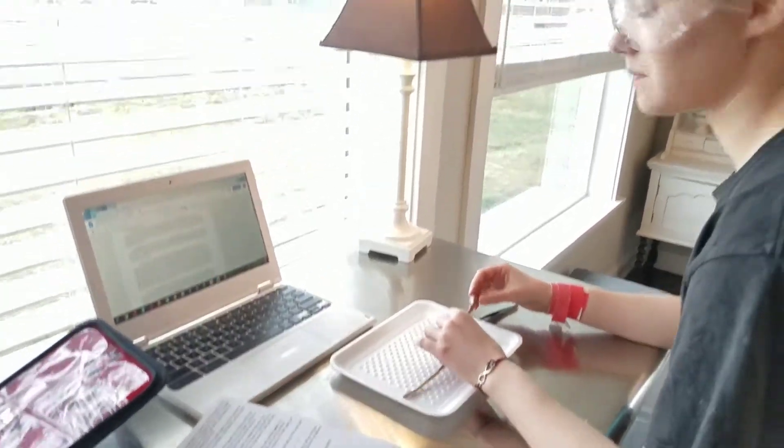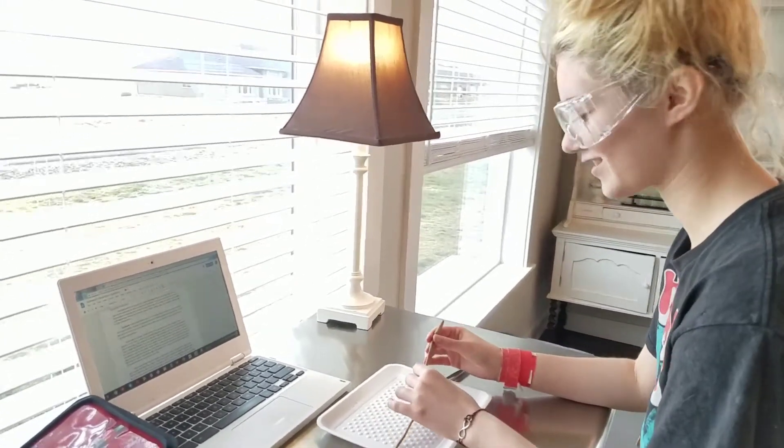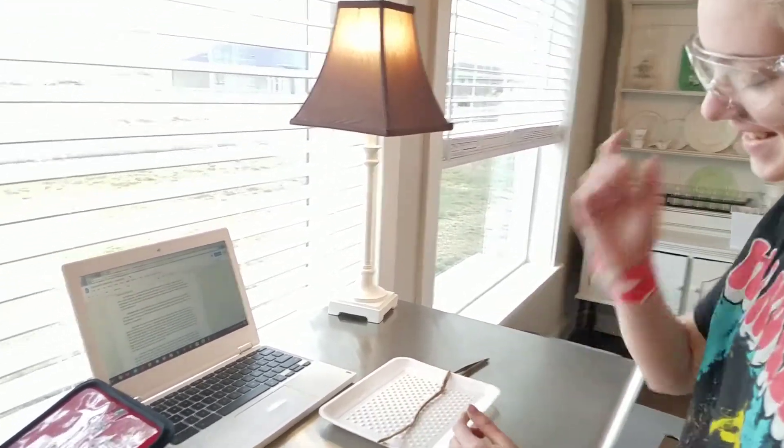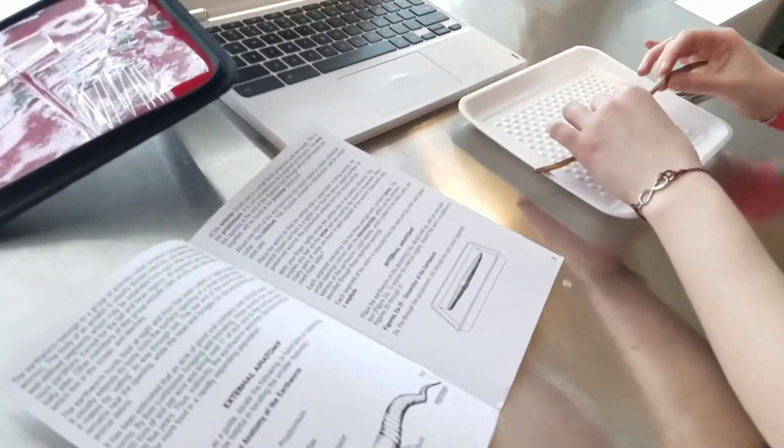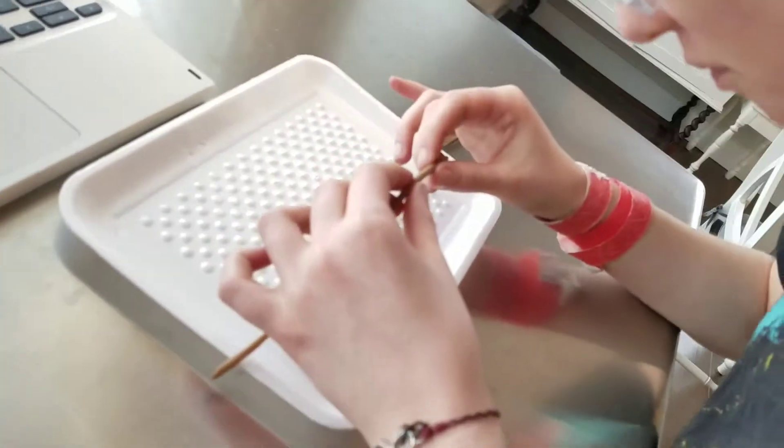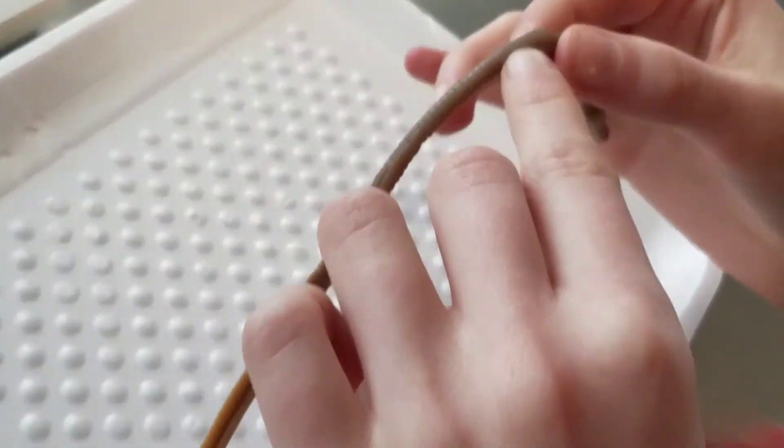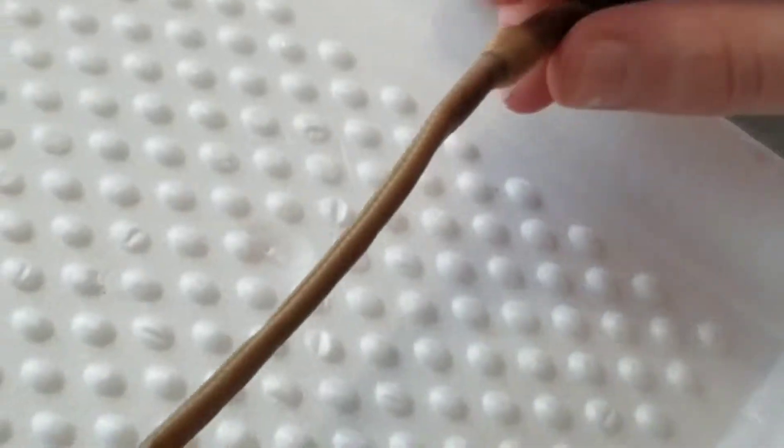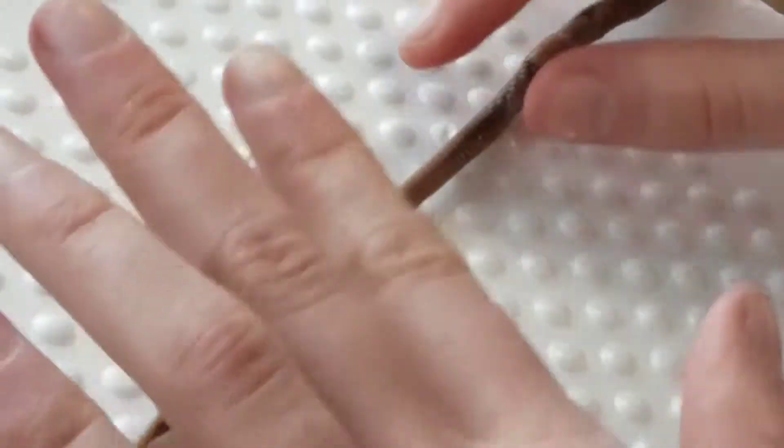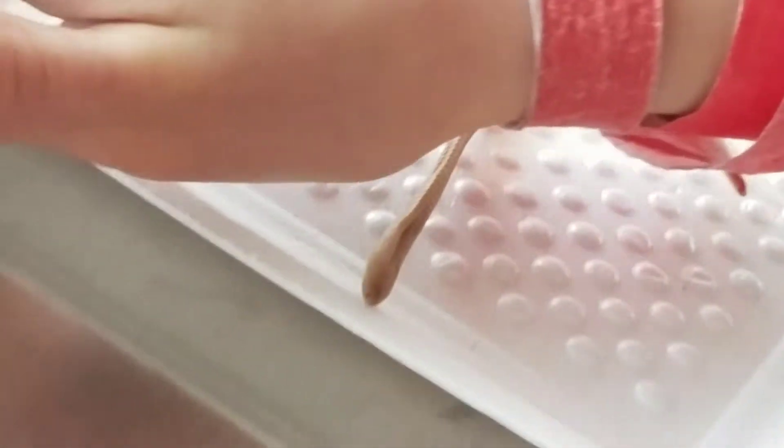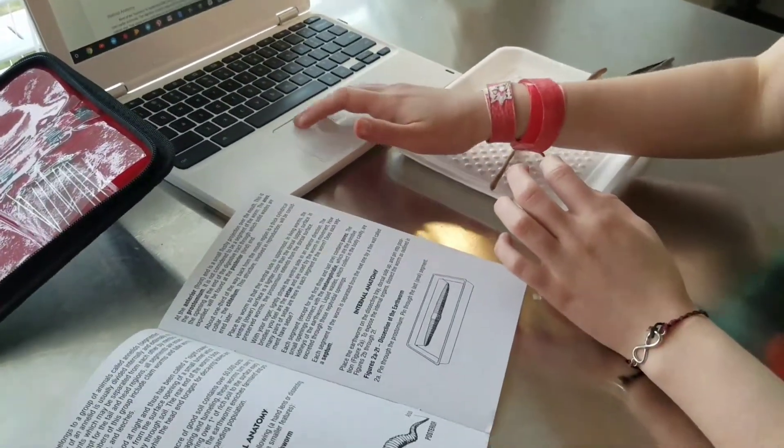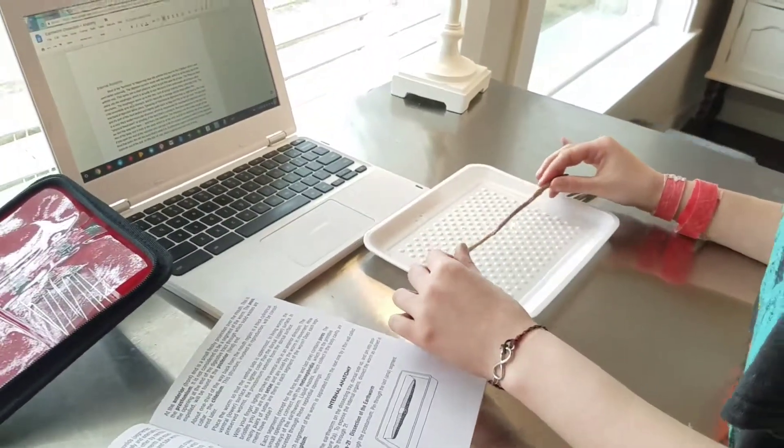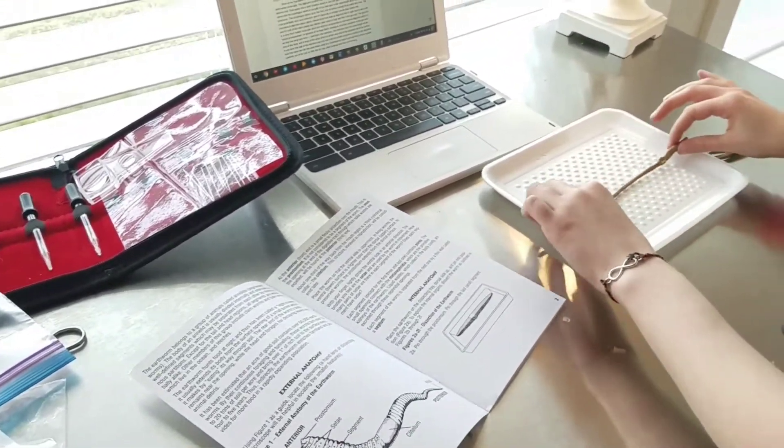So those little hairs are what help make it move. I think that's everything. Oh no, there's also little pores. You can barely see them, there's just little dots. And those are pores that help it extract nutrients and stuff. I think that's everything external, so we can start dissecting. You're supposed to dissect it from the lighter side.